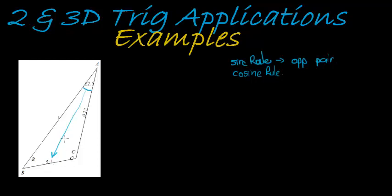We have 5.1 as its opposite side, so I can use this together with other information to calculate any other side. The only other piece of information I have is that side length, so I can use this opposite pair to find the other opposite pair. In other words, I can use sine — I'm trying to calculate sine of B.